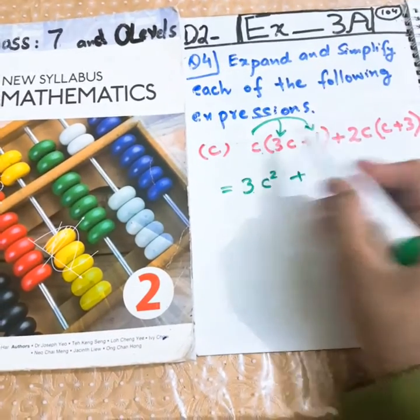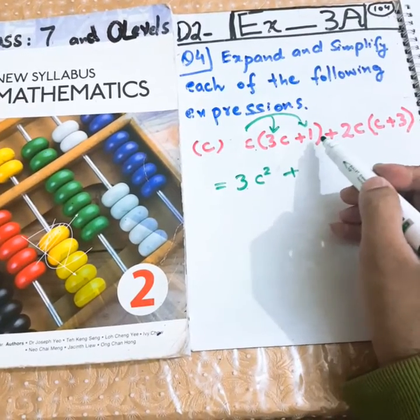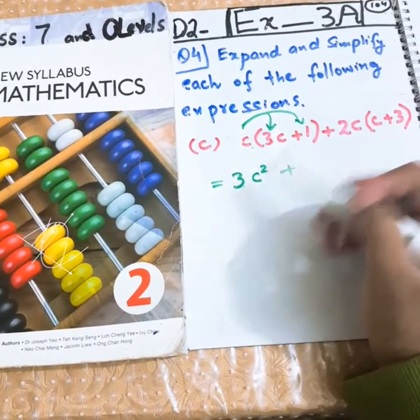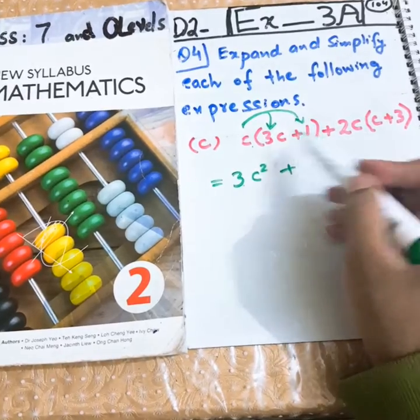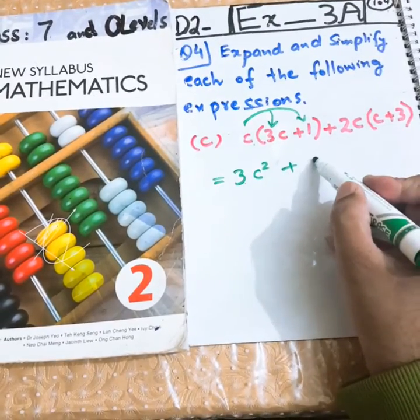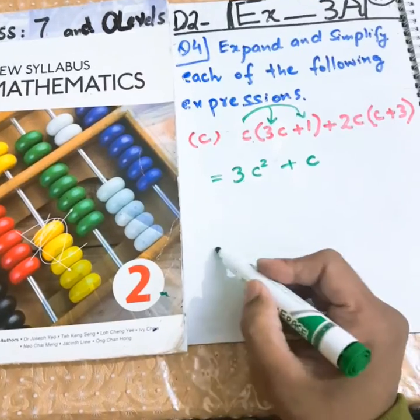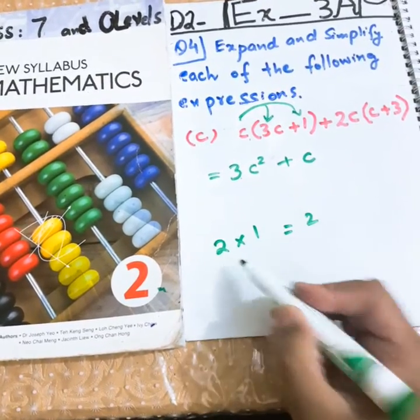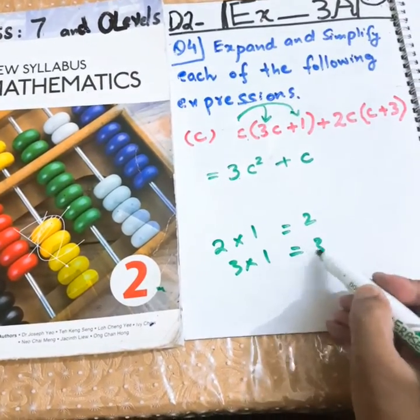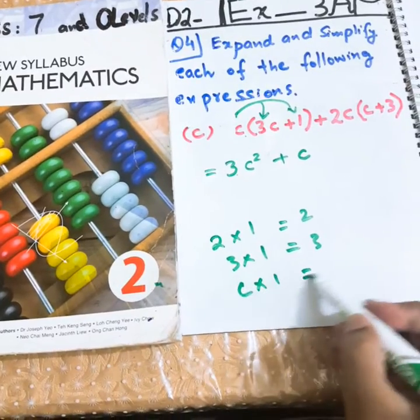Now, this is the turn of C to get multiplied by 1. You know, everything which multiplies with 1 is the same thing which multiplies. Like, C multiplied by 1 is C itself. For example, 2 multiplied by 1 is 2. 3 multiplied by 1 is 3. Similarly, C multiplied by 1 is C.